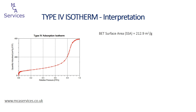We can use this isotherm to calculate the BET surface area of the sample — in this case 212.9 square meters per gram, calculated over the relative pressure range 0.05 to 0.25. From the region of the Gurvitch plateau at high relative pressures, we can also calculate the total pore volume of the sample, calculated at 0.62 cubic centimeters per gram of sample at 0.994 relative pressure.